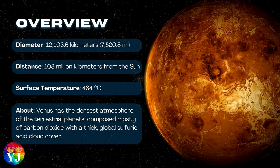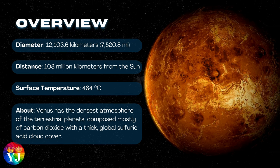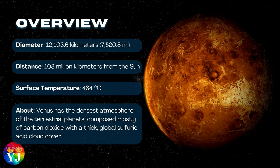About Venus: Venus has the densest atmosphere of the terrestrial planets, composed mostly of carbon dioxide with a thick global sulfuric acid cloud cover.